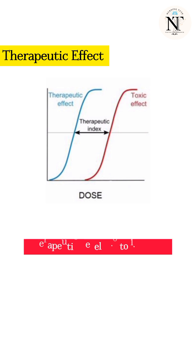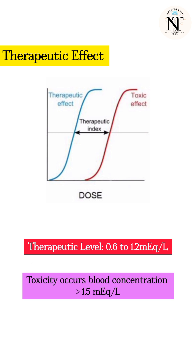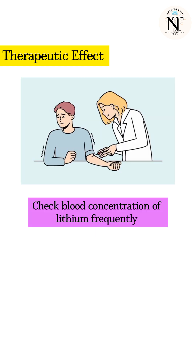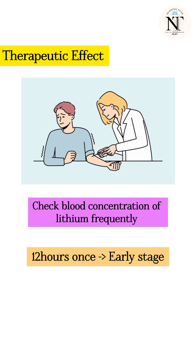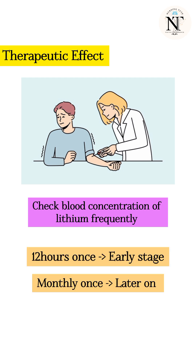The therapeutic level is between 0.6 to 1.2 mEq per litre. Toxicity occurs when blood concentration of lithium exceeds 1.5 mEq per litre. So patients who are taking lithium should check blood concentration of the drug frequently — preferably every 12 hours at the starting stage, and later on monthly.